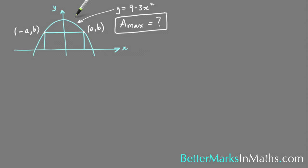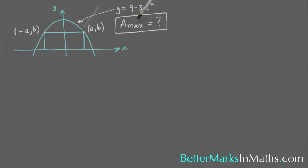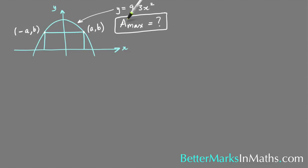In this question you have a parabola with the equation y equals 9 minus 3x squared, and inside that you have a rectangle that is touching the parabola at two points, whose bottom side is part of the x-axis. You have to find the maximum area of that rectangle.